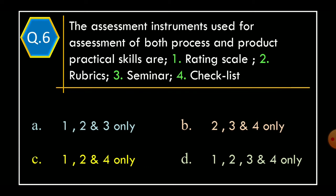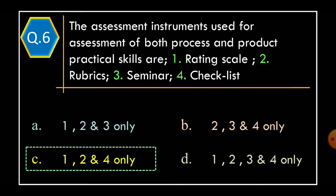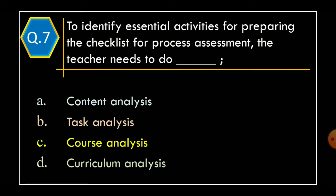Question 6: The assessment instruments used for assessment of both process and product practical skills are — Statement 1: rating scale; Statement 2: rubrics; Statement 3: seminar; Statement 4: checklist. Options: Option A: Statements 1, 2, and 3 only; Option B: Statements 2, 3, and 4 only; Option C: Statements 1, 2, and 4 only; Option D: all statements. The correct option is Option C: Statements 1, 2, and 4 only.